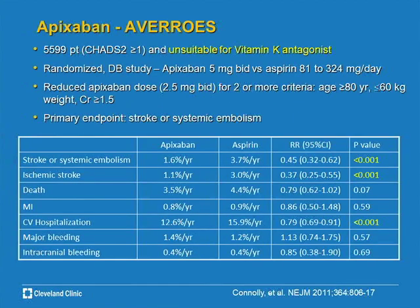The last drug to discuss is apixaban, studied in two trials. The first trial studied patients at increased risk of bleeding from warfarin — patients who could only be candidates for aspirin. We gave them apixaban versus aspirin and found that apixaban was far better than aspirin: much lower risk of stroke, with similar bleeding risk to aspirin. So you have a drug with much better stroke protection than aspirin and no increased bleeding risk compared to aspirin.